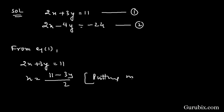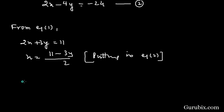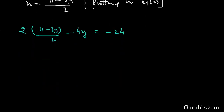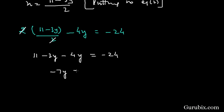Putting into equation number 2: 2 times (11 minus 3y) over 2, minus 4y, equals to minus 24. We cancel the 2s, giving 11 minus 3y minus 4y equals to minus 24. This means minus 7y equals to minus 35, therefore y equals to 5.